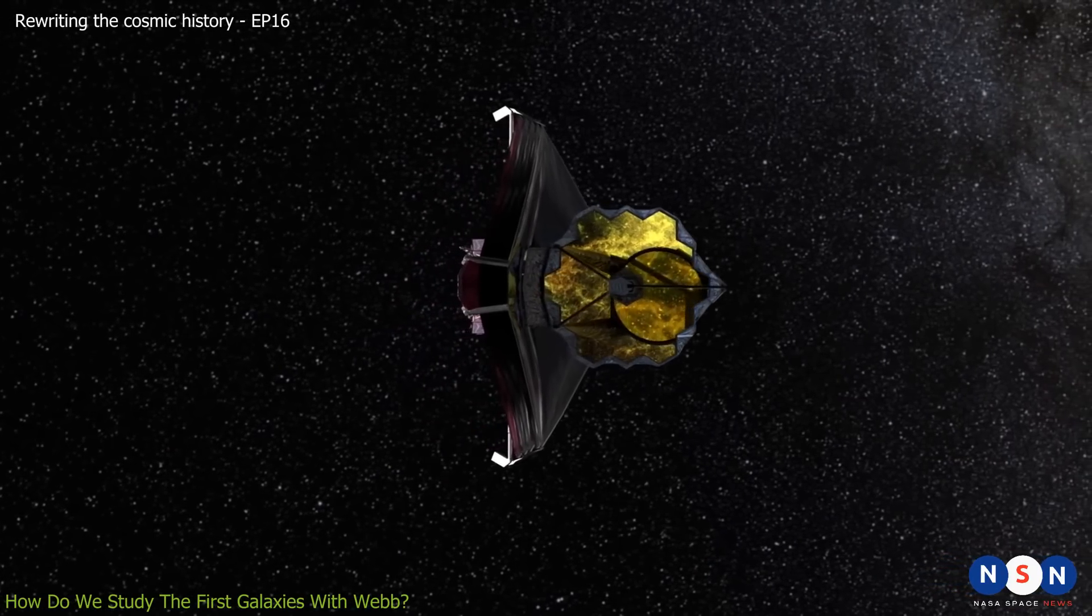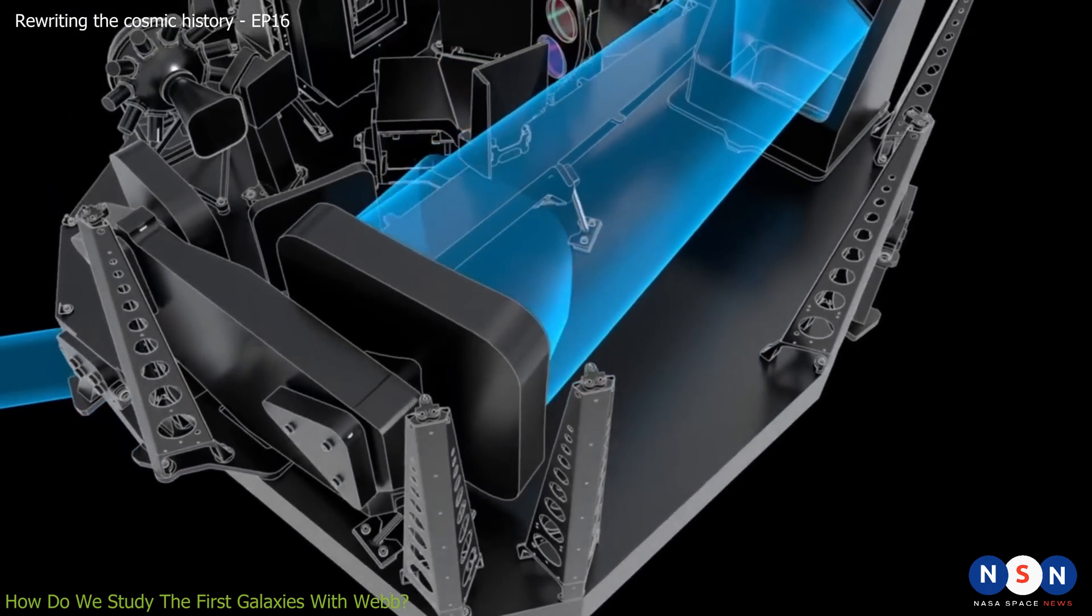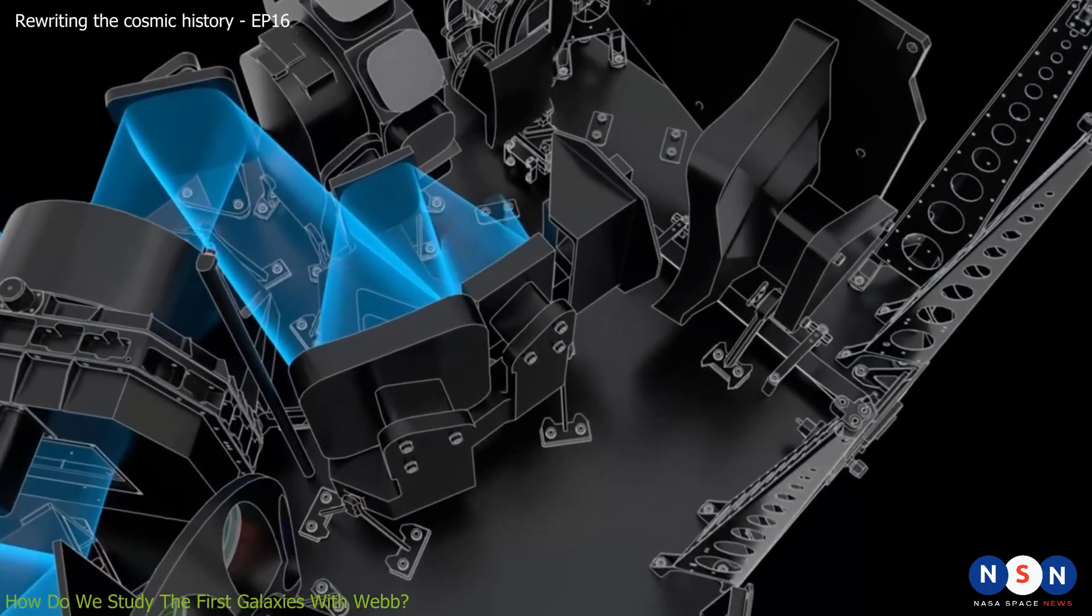Webb has two instruments that can perform spectroscopy, NIRSPEC and MIRI. NIRSPEC can obtain spectra of hundreds of galaxies at once, covering a wide range of wavelengths from near-infrared to mid-infrared.